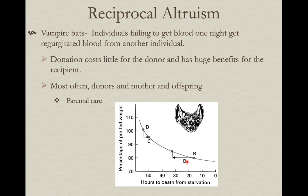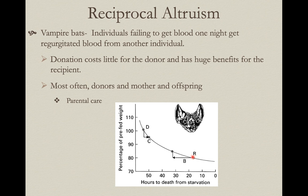If Jim came back really fat and happy with lots of blood, he'll regurgitate some for Bob. Yes, it will push Jim slightly closer to starvation — but that cost is relatively minor. Look at the benefit to Bob: he was just hours from death, maybe not even going to make it to the next night. The benefit of putting him much farther from starvation is huge. Relative low cost, high potential benefit.